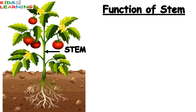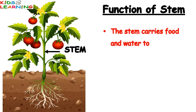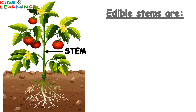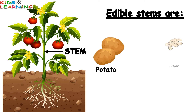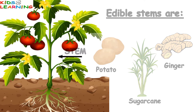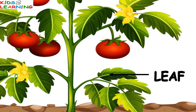Stem. Function of Stem: The stem carries food and water to different parts of a plant. It is strong and helps hold the plant up. Some edible stems are potato, ginger, and sugarcane.